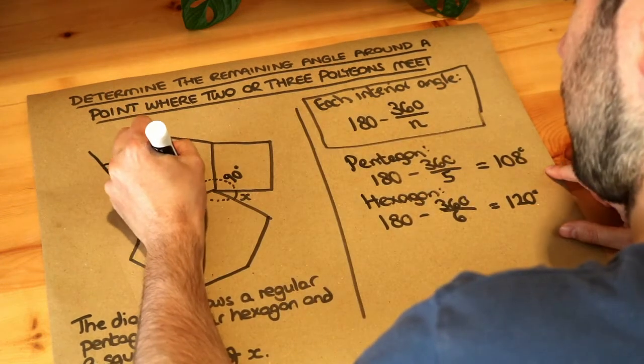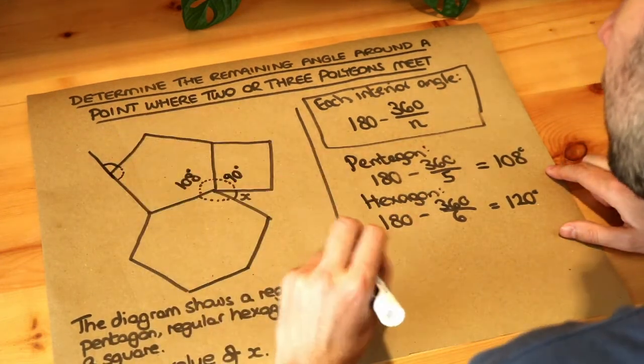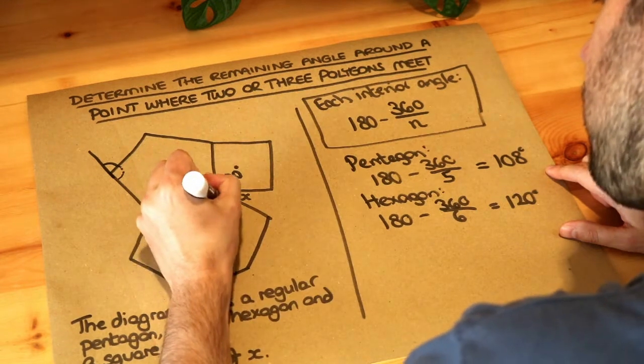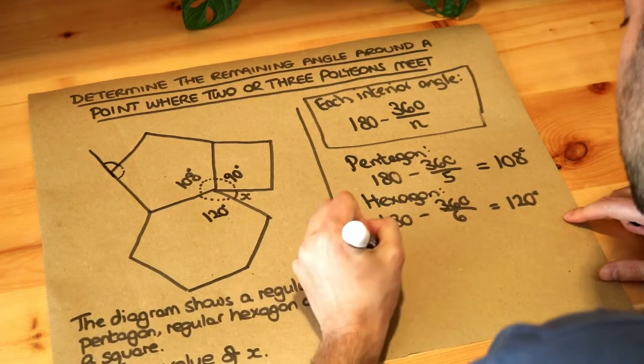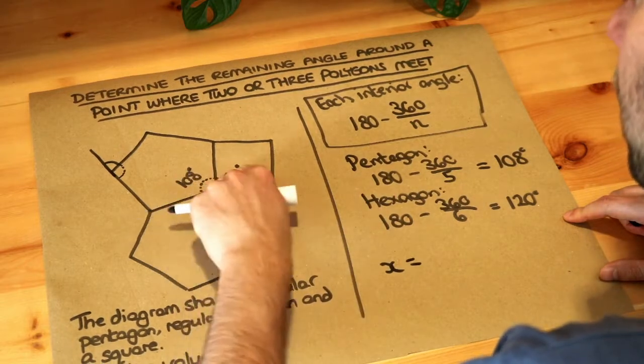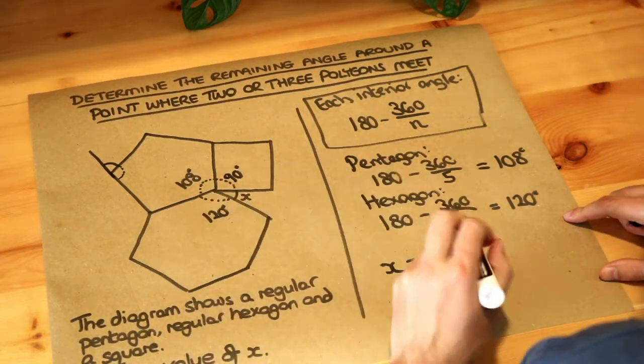Let's just put these in so that's 108 degrees there, the pentagon. This is 120 degrees in the hexagon and then all we need to do is we just subtract these three angles from 360 because we said they add up to 360.